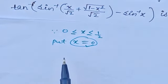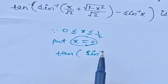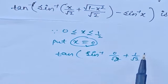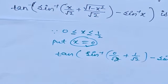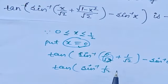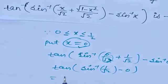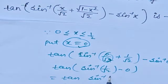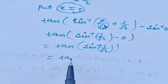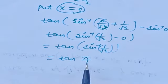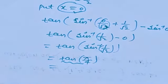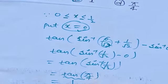Put x = 0 in the given expression. We get tan of sine inverse(0/√2 + √(1−0)/√2) minus sine inverse 0, which simplifies to tan of sine inverse(1/√2). Since sin(π/4) = 1/√2, we get tan(π/4), which equals 1. So the answer is 1, which is option C.